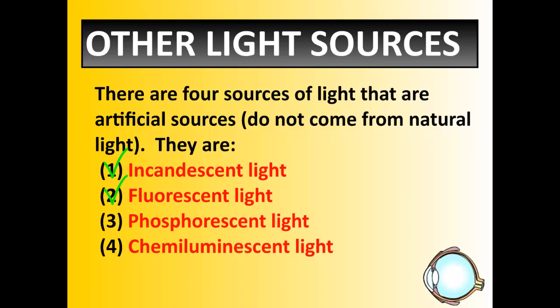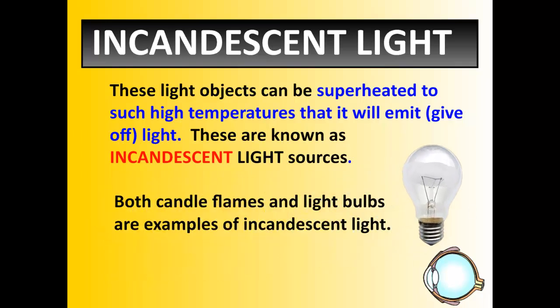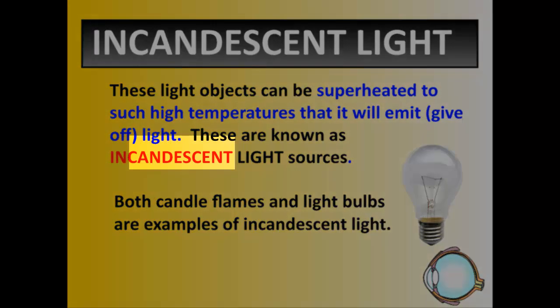Incandescent light you're very familiar with — it's the simple light bulbs at home. These light bulbs have been around for a very long time. They are superheated to give off such a high temperature that they emit light — and emit means to give off light. That's incandescent. Flames can also be considered incandescent, but they're not artificial. These types of traditional light bulbs are incandescent.